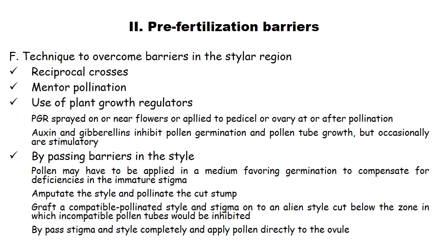Techniques to overcome barriers in the stylar region include: reciprocal crosses, mentor pollination, use of growth regulators (sprayed on or near flowers, or applied to pedicel or ovary at or after pollination — oxins and gibberellins inhibit pollen germination and pollen tube growth but are occasionally stimulatory), amputating the style and pollinating the cut stump, grafting a compatible pollinated style and stigma onto an alien style cut below the inhibition zone, and bypassing stigma and style completely by applying pollen directly on the ovule (a surgical technique).